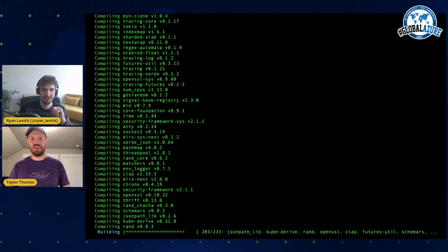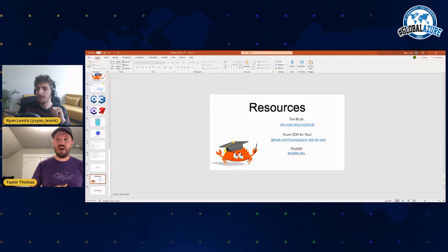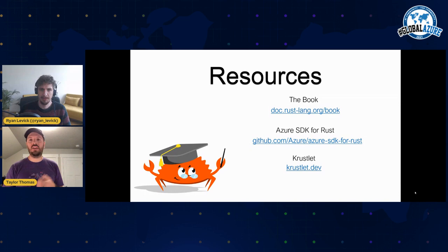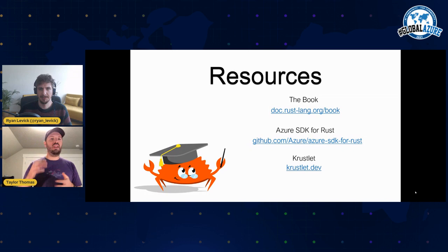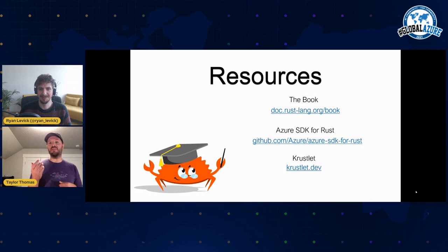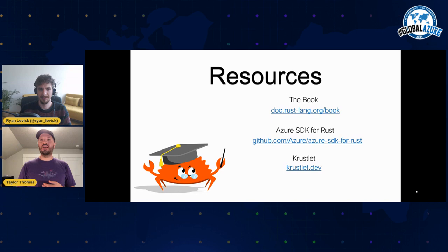We're going to put up some resources for you to look at. The first one being the Rust Lang book — this is basically the Rust Bible. It explains every single part of the Rust language, starting off really easy and then going into exquisite detail about each of the underlying things. It's a very, very good resource. We also have the link to the Rust SDK and the Krustlet site, in case you're interested in those things.